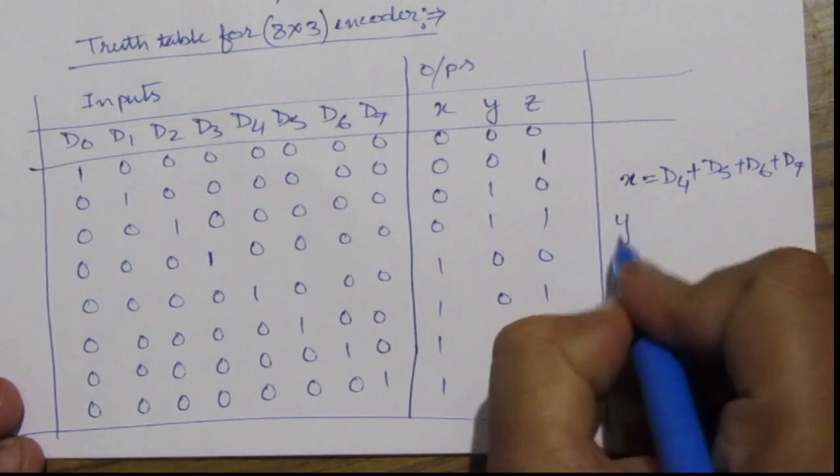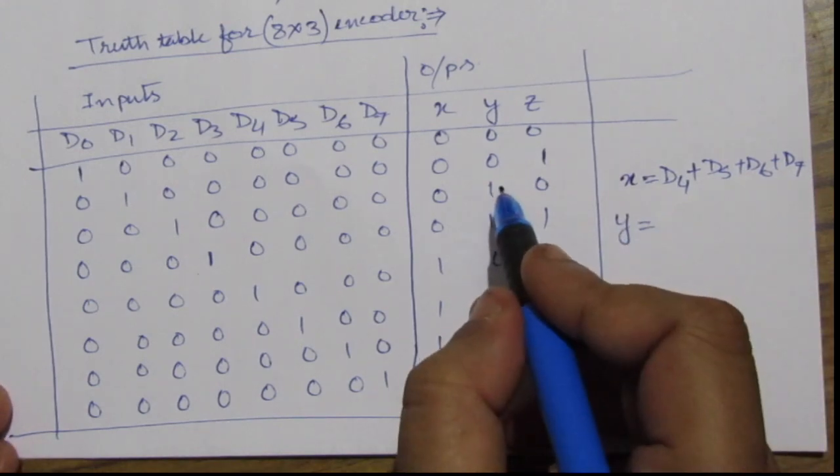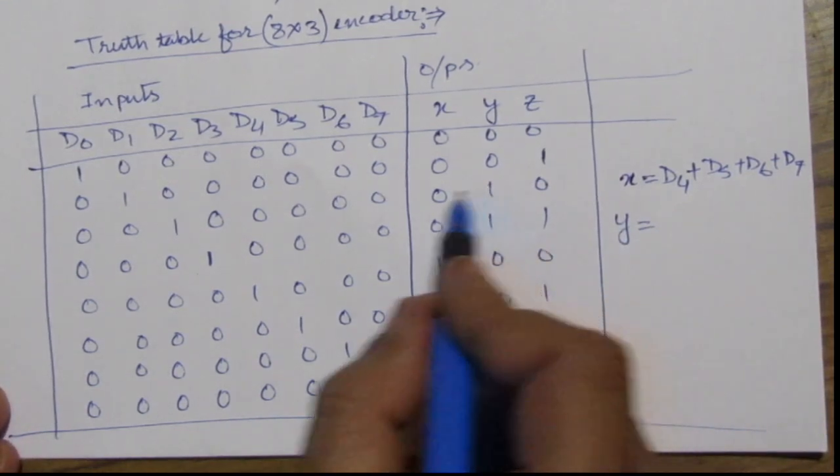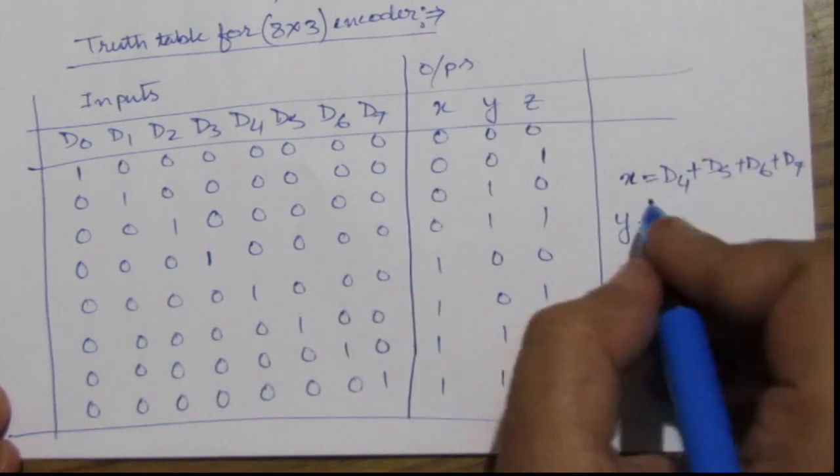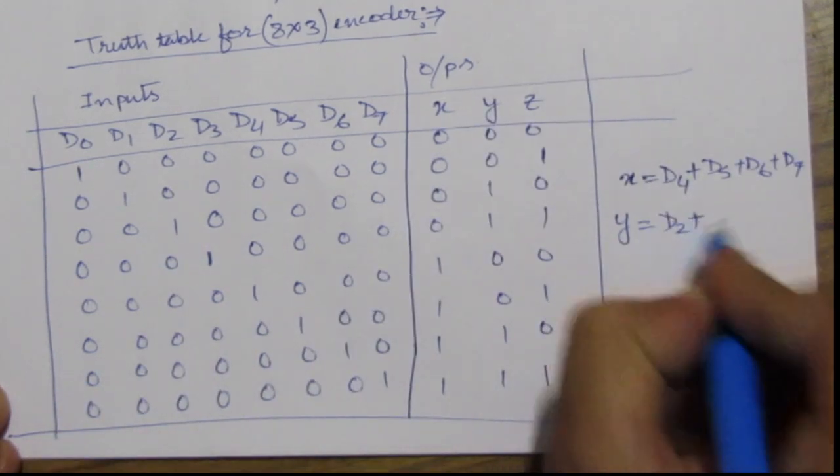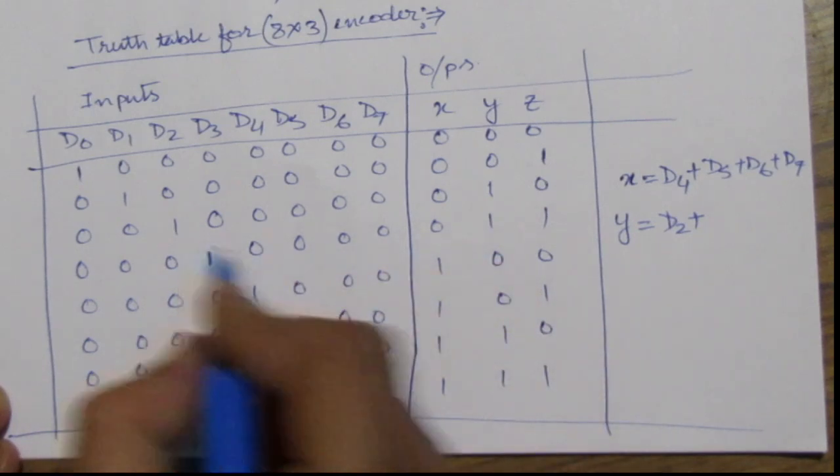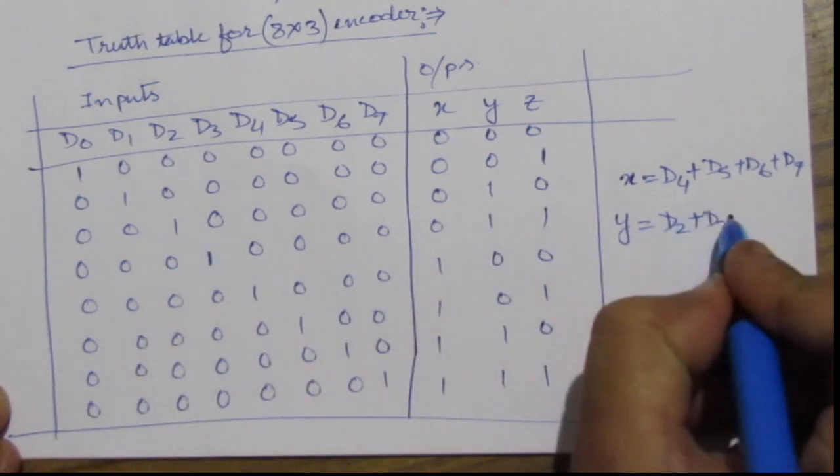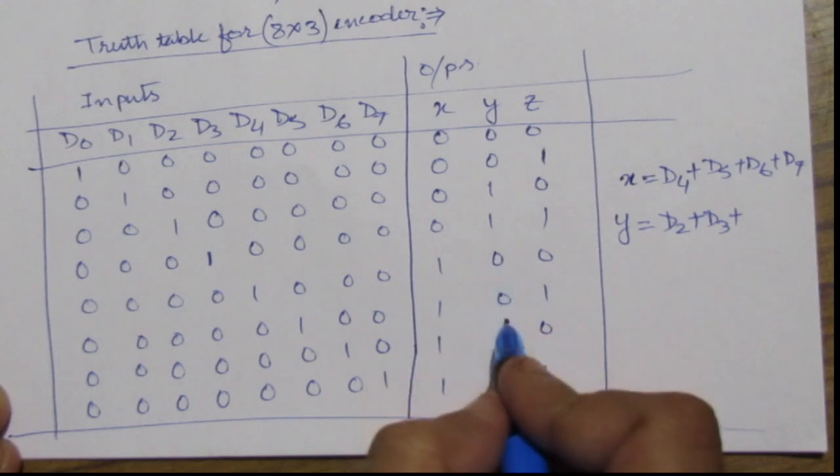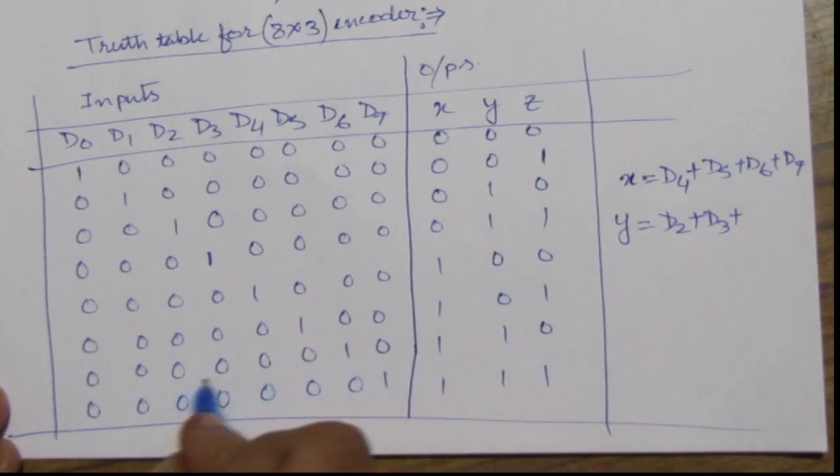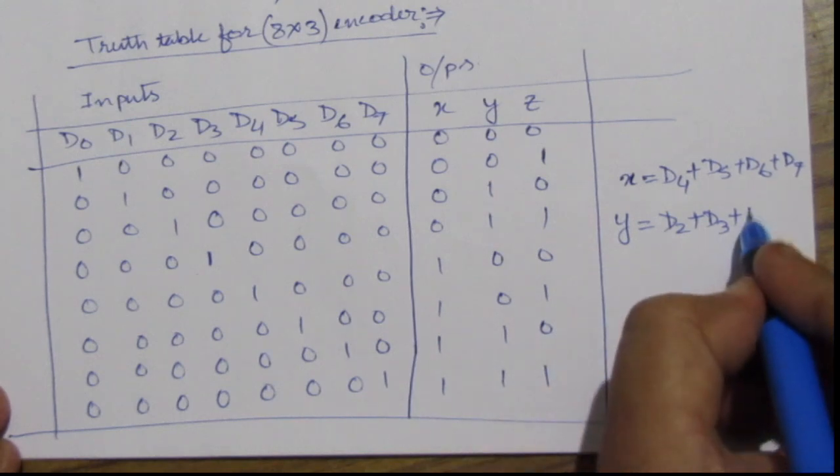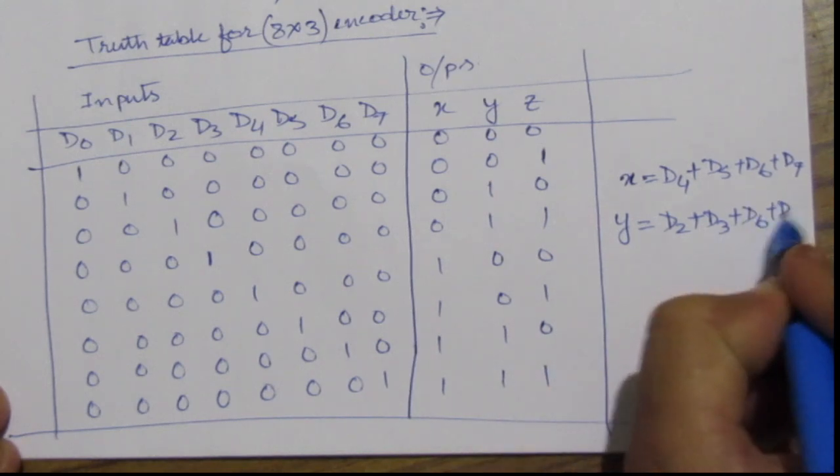Similarly for y, we will have here we have one one. For this one we have d2. d2 plus this one we have d3. d3 plus. For this one we have d6 and for this one d7. d6 plus d7.